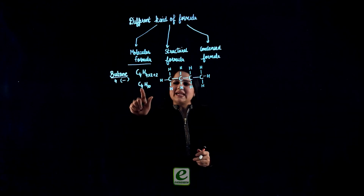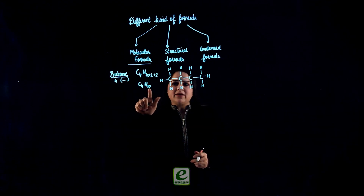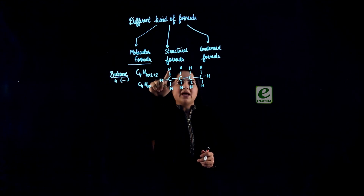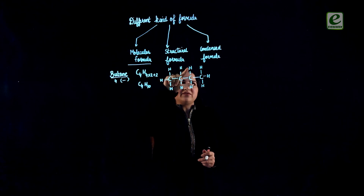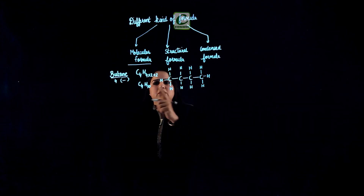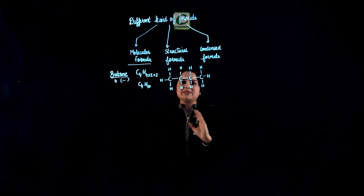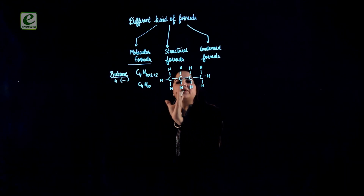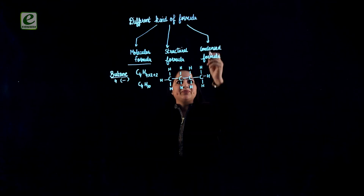If we have 4 carbons and 10 hydrogens, counting in this compound: 3, 4 carbons and 1, 2, 3, 4, 5, 6, 7, 8, 9, and 10 hydrogens. The number of atoms will remain the same; only the representation will change.